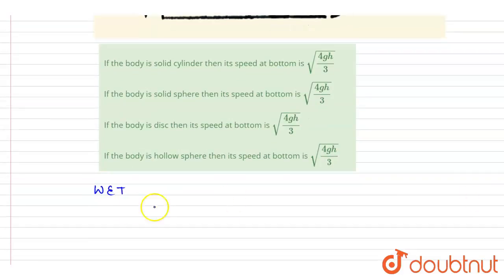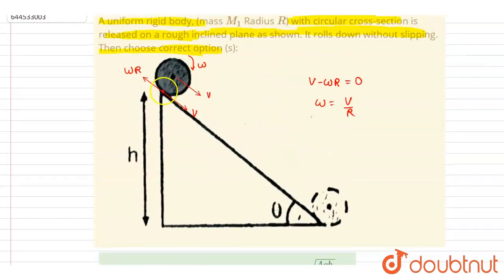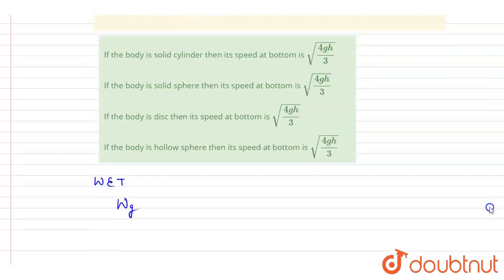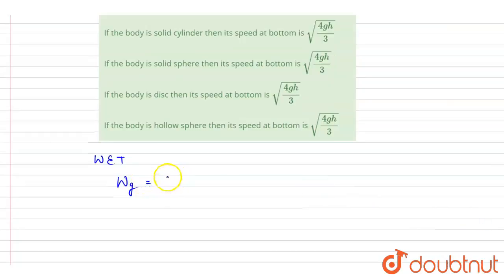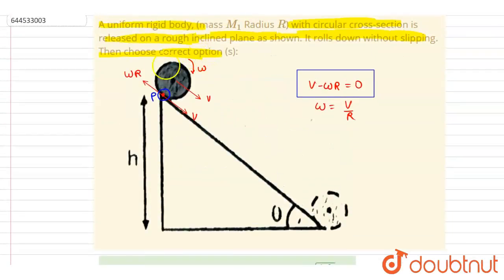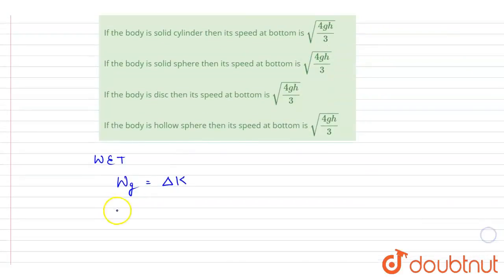Now we apply the work-energy theorem from top to bottom. The only force doing work is gravity. The friction force does zero work because point P — the point of contact — is not moving at any instant, so the point of application of force is stationary. Therefore, work done by gravity equals the change in kinetic energy.